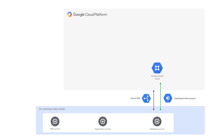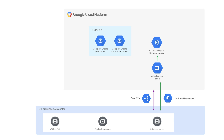We create a VPC network. Then we configure the connectivity between the on-premise network and the Google Cloud network. We replicate the on-premise servers to the Compute Engine instances. Then create snapshots of the web and application server instances. We then create a custom image of the database server on Google Cloud with the same configuration as on-premise. Then we start a database instance in Google Cloud using that custom image and attach a persistent disk to the instance for database and transaction logs.